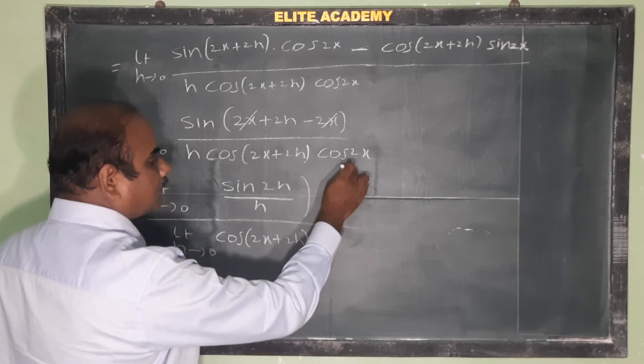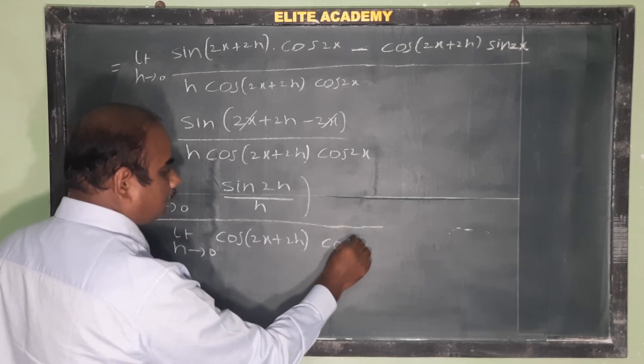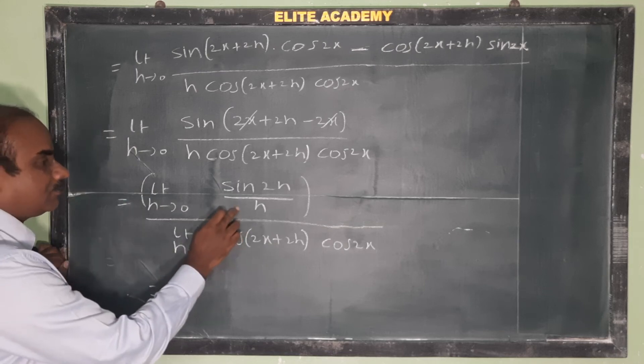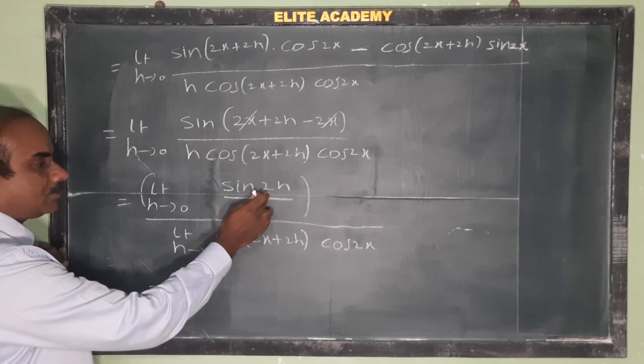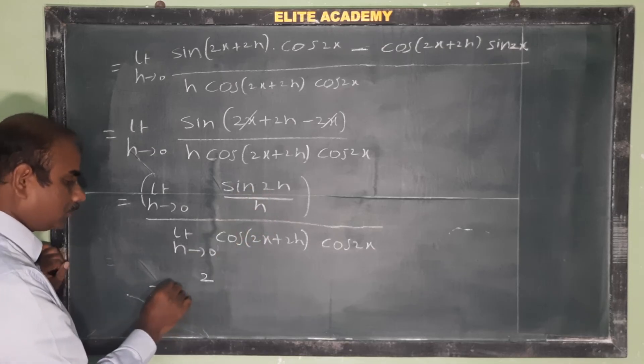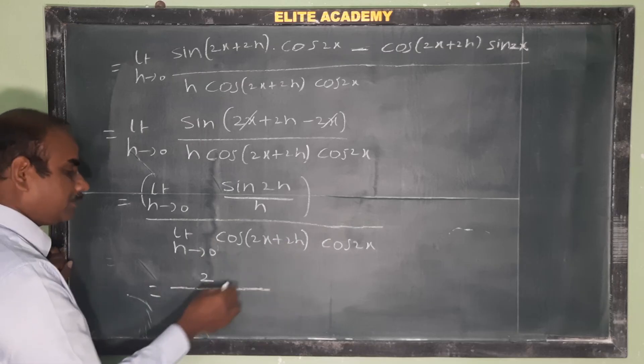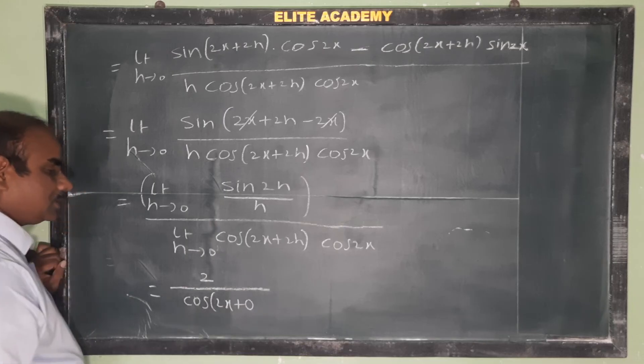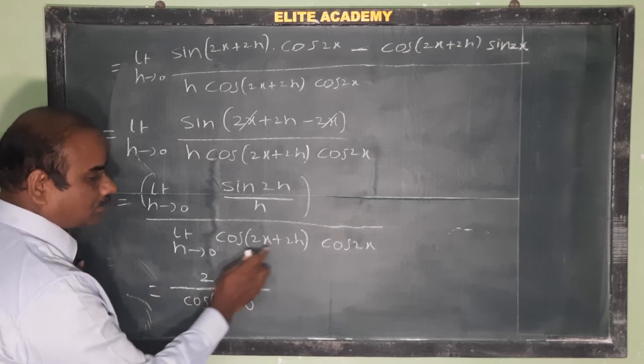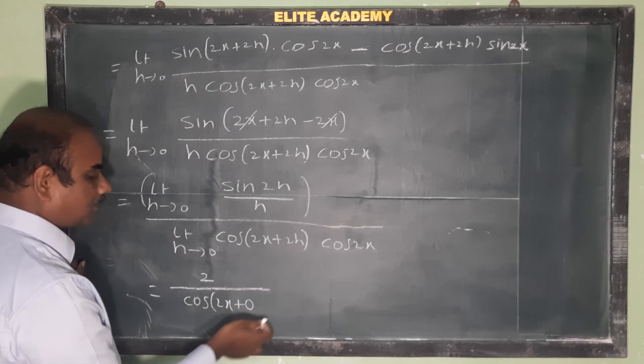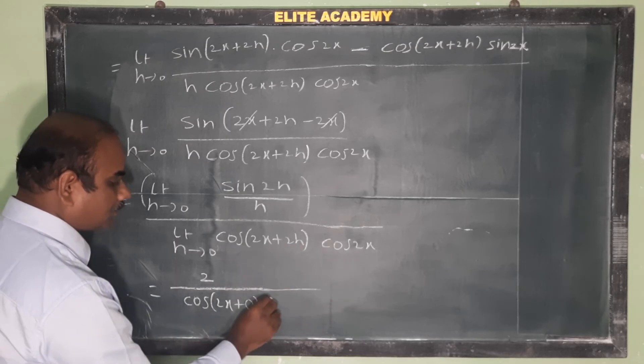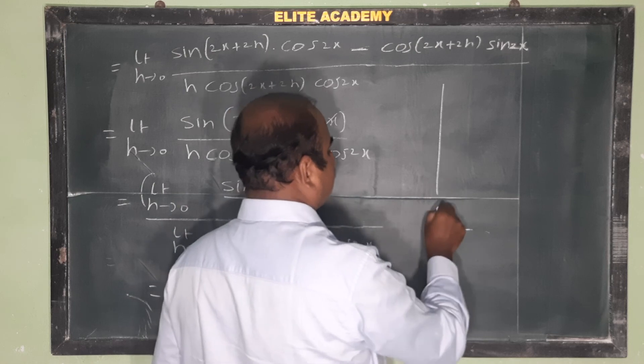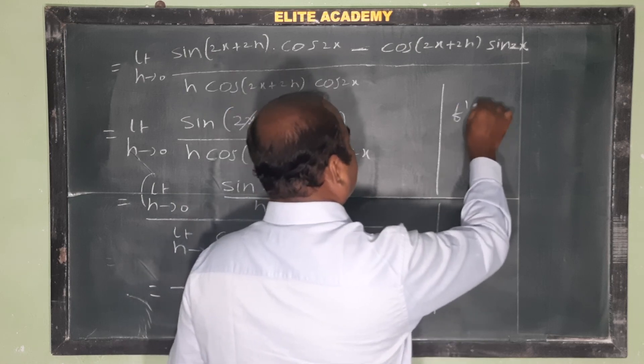For the h coefficient formula, h coefficient is 2, so the answer is 2. As h tends to 0, cos(2x plus 0) equals cos 2x, and again cos 2x is there.